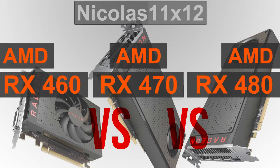The RX 460, as I've suspected due to the significantly lower pricing, doesn't perform even close to the RX 470 and 480 GPUs. At 1080p with maxed out settings, most of the time games are barely playable, whereas even with the RX 470 we're given a decent playable framerate — and even better ones with the RX 480 obviously.